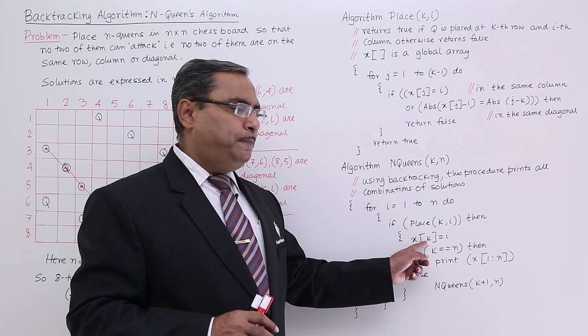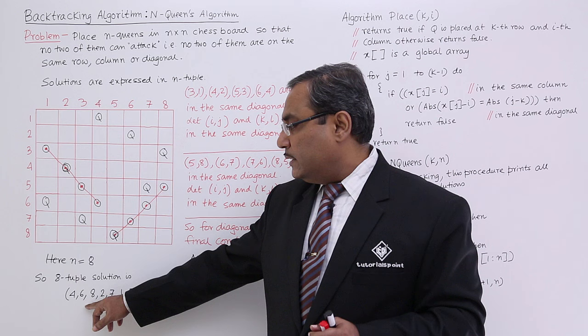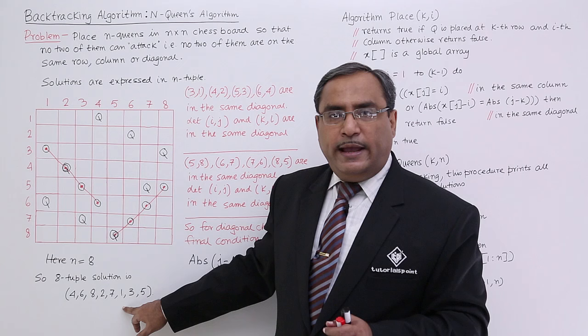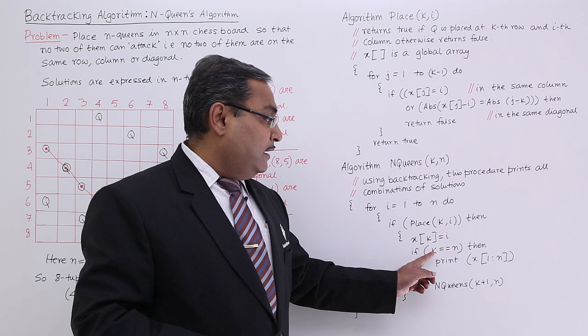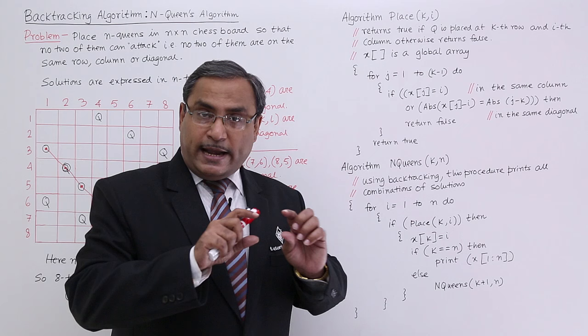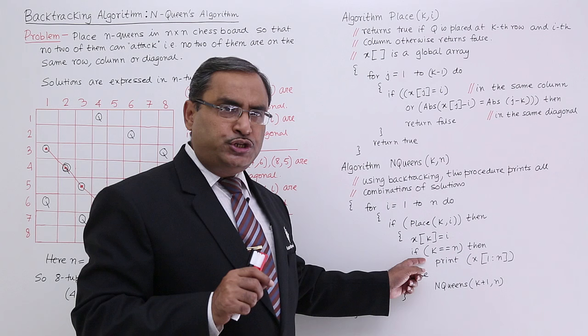So at the kth position of this x array, which is holding the n-tuple — I discussed this in my earlier video — for this particular solution it will be kept in an n-tuple, in a one-dimensional array x. So x[k] = i, and if k is equal to n, that means it is the last queen being placed and the x array has been filled with n column numbers. That means I have got one solution, and I shall print the x array content.